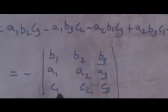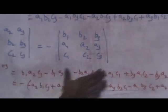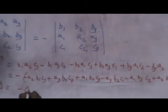If you expand this, you will get the answer like this. From the next step, you take minus common out. Then you will get the same left-hand side. Then we prove that delta is equal to minus delta. This is property 2.